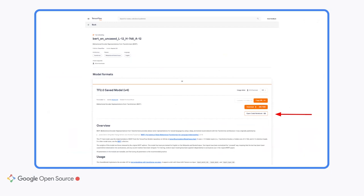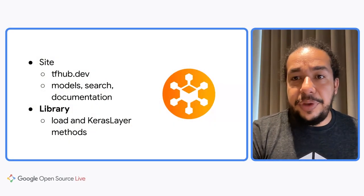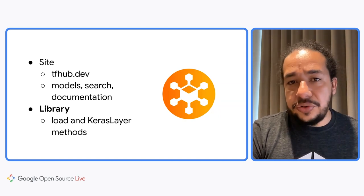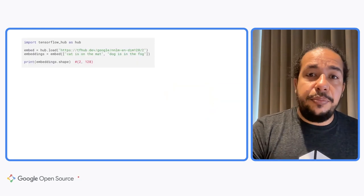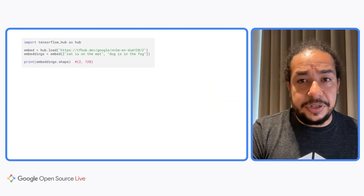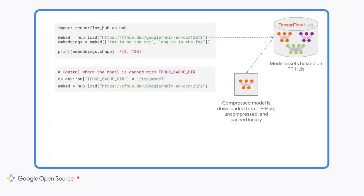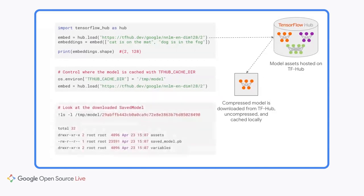TensorFlow Hub models also have interactive Colab notebook links that allow you to play with the models in code right from the browser, powered by Google infrastructure with nothing to install and completely free. Beyond the site, TensorFlow Hub has a library to make use of these models very easily. With one line of code, you can load a model and have it ready for inference, fine-tuning, or transfer learning. Internally, the library verifies the local cache — if the model isn't present yet, it downloads it from TensorFlow Hub's servers. Next time you run the same line, it loads from local cache.